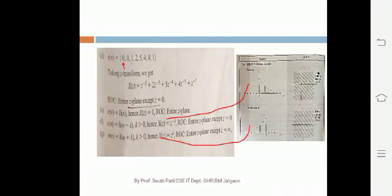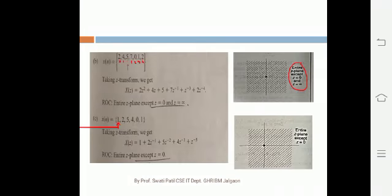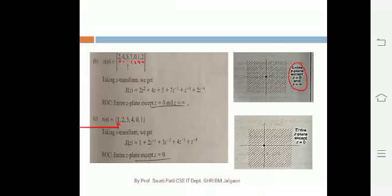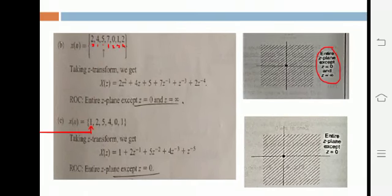Hello students. In the previous video we solved the problem of how to calculate the region of convergence. For region of convergence, first we have to look at the origin position. In the previous problem we had the origin at position 5, so that was a two-sided signal. Now let us see another type of problem.